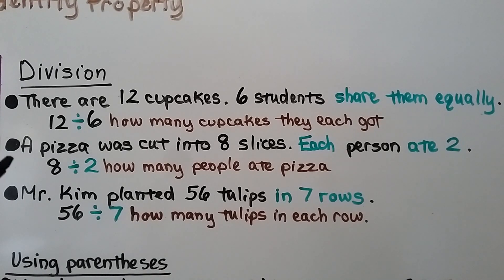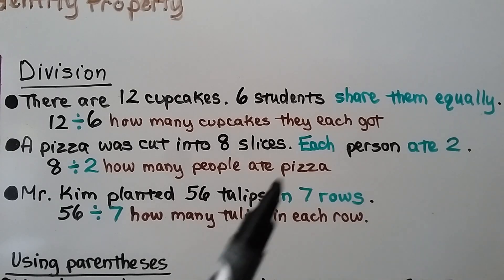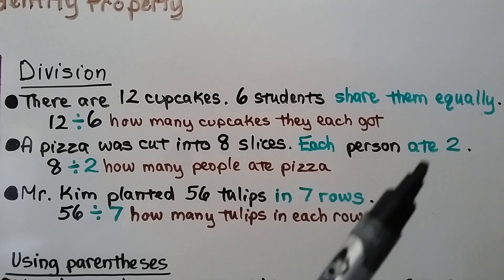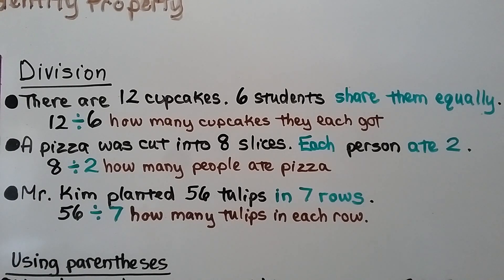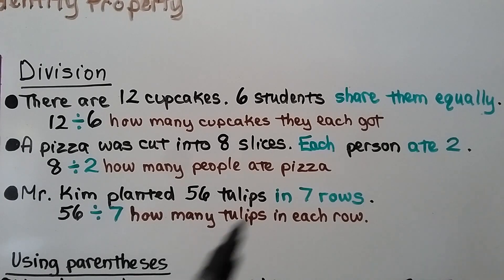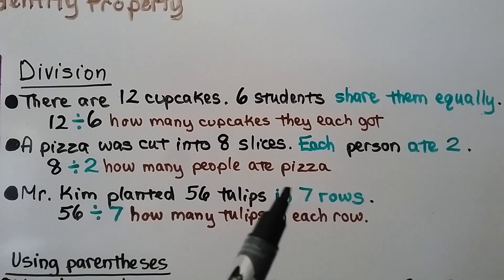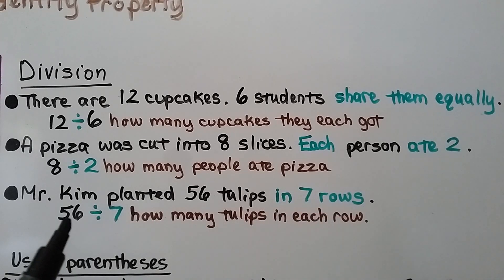A pizza was cut into 8 slices and each person ate 2. Because each person ate 2, we divide 8 by 2 for how many people ate pizza. Mr. Kim planted 56 tulips in 7 rows. We need to split them equally into 7 rows, so that's 56 divided by 7 for how many tulips are in each row.